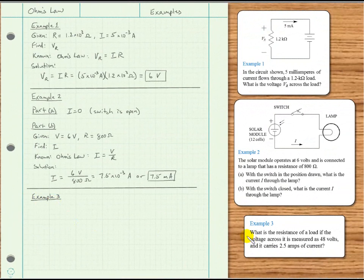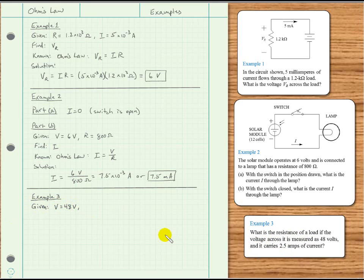In example 3, we are asked, what is the resistance of a load if the voltage across it is measured as 48 volts and it carries 2.5 amps of current? So we'll start the same way. We'll write down the given information. And we have the voltage given as 48 volts and also the current I is 2.5 amps. And then what are we asked to find? What is the resistance of a load? So we're asked to find R.